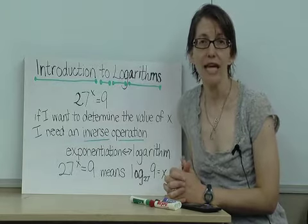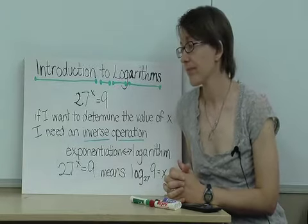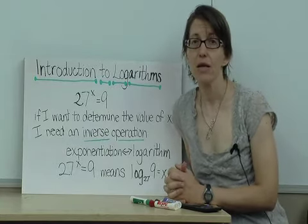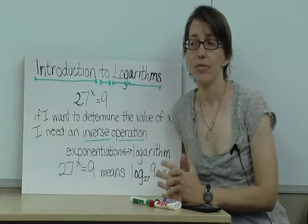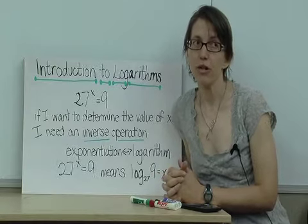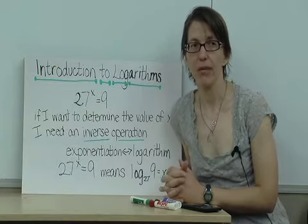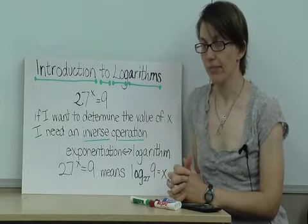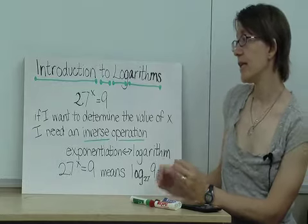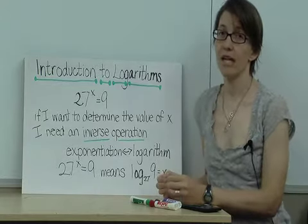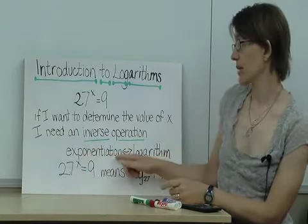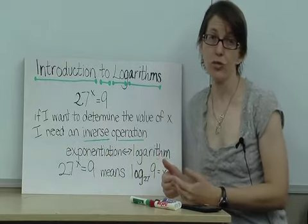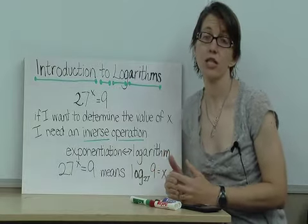An operation that will take x out of the exponent and say x is equal to this. In mathematics, this was an operation that was invented fairly recently, probably about 1600, and it is called the logarithm. It is the inverse of exponentiation. So, exponentiation and logarithms go together like square and square root, like addition and subtraction. They are inverse operations.